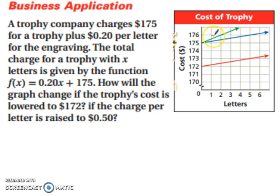So, let's look at our functions here. This blue line here is f(x), so that's this function here. So let's look at our first question. How will the graph change if the trophy's cost is lowered to 172? Well, if the initial cost is lowered to 172, the red one is going to be a translation down three units.